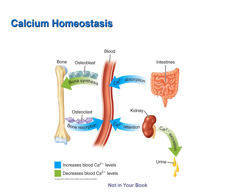To summarize the effects of vitamin D and parathyroid hormone on blood calcium levels, let's look at this figure from your book. Vitamin D increases the absorption of calcium from the intestines, thereby increasing blood calcium levels. Parathyroid hormone released from the parathyroid glands activates osteoclasts, increasing bone resorption, releasing calcium from the bone, and increasing blood calcium levels. Parathyroid hormone also decreases the amount of calcium excreted in the urine, increasing calcium retention by the kidneys and maintaining blood calcium levels.